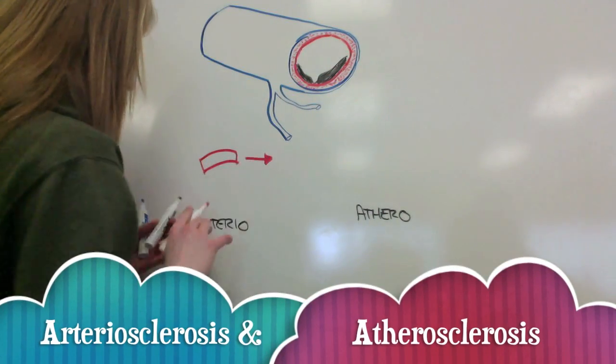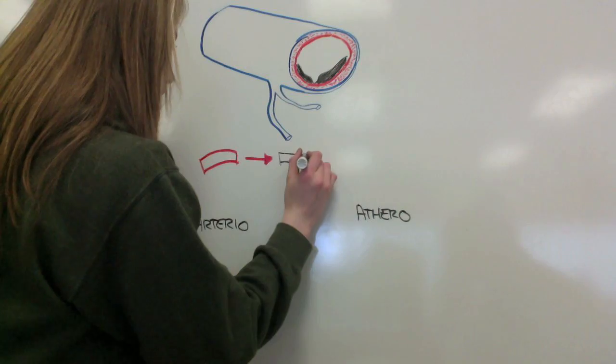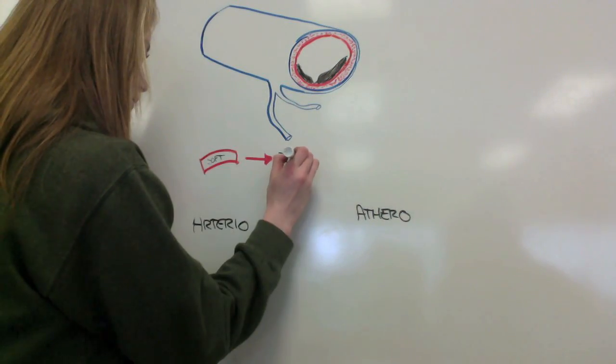Arteriosclerosis goes from soft vessels to firm vessels. This happens in large arteries. You lose flexibility.